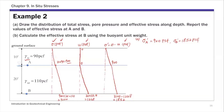The total stress at the surface is 900 psf (10 times 90). At point B it's 900 plus 20 times 110, giving 3100 psf. Pore pressure is zero above the water table, and at point B it's 20 times 62.4, giving 1248 psf. Effective stress is total minus pore pressure: 900 psf at point A and 1852 psf at point B.